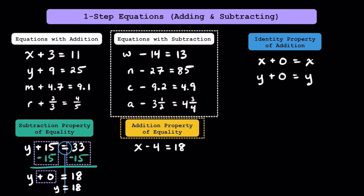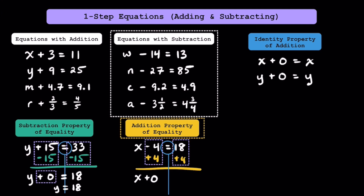Let's take a look at the addition property of equality together. Here we have the equation of x minus 4 is equal to 18. Pause and think about what value x could be to make this equation true. If you were thinking 22, awesome! This property states that you can add the same value to both sides of any equation. As long as you're doing the same thing to the left side as you are to the right side, you're not breaking any rules. On the left side, notice how we have a negative 4 and a positive 4 — combining opposites always gets us 0, so we'll have x plus 0. On the right side, 18 plus 4 is equal to 22. Since adding 0 to anything stays the same, x plus 0 is just x, which is equal to 22.